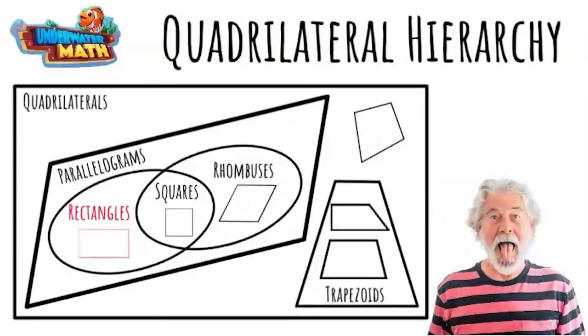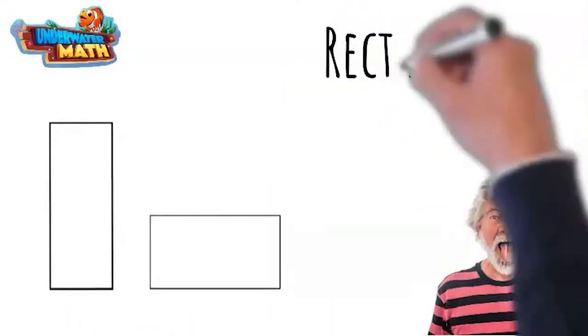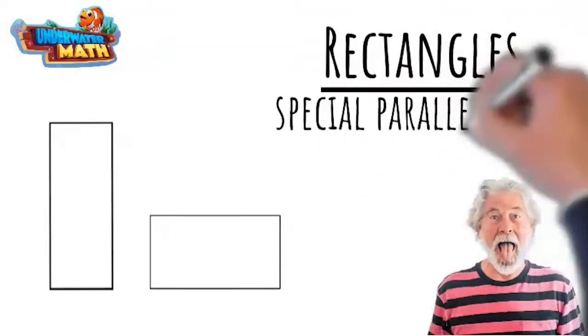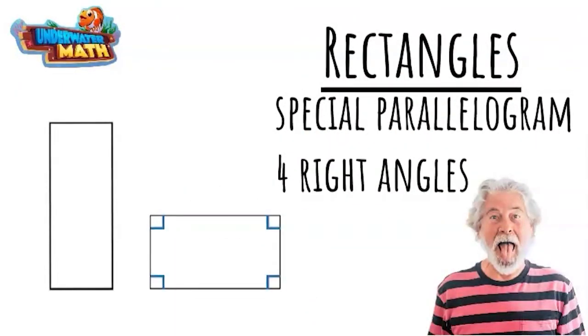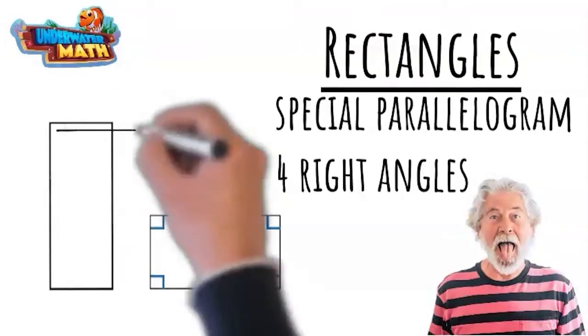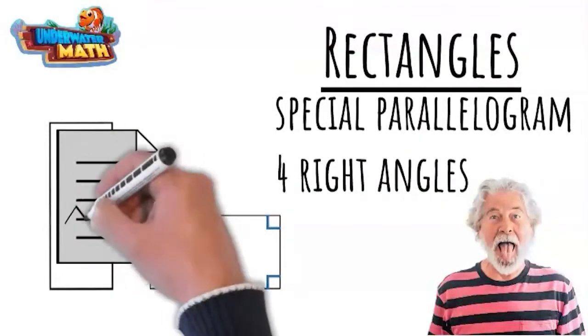There are two special types of parallelograms to watch out for. The first is a rectangle. These parallelograms have the two pairs of parallel sides, but they also have four right or 90-degree angles. You can also tell it's a rectangle because all the angles are exactly the same. If you hold a corner of your paper up to the right angle, it should match.